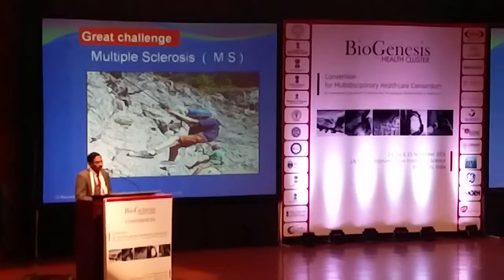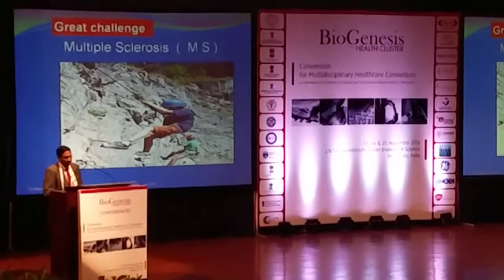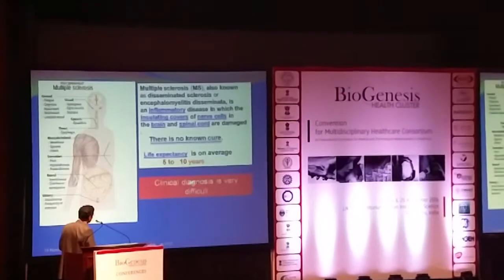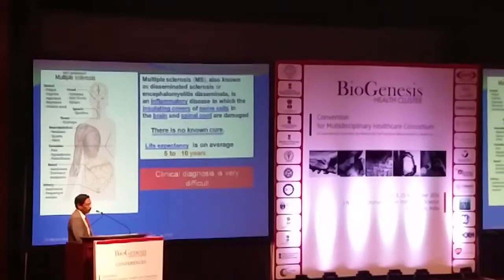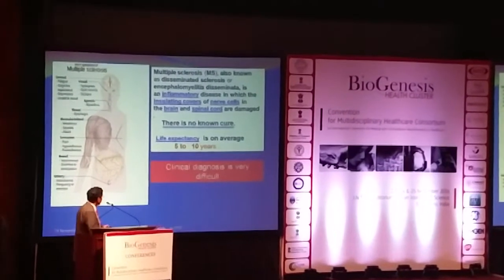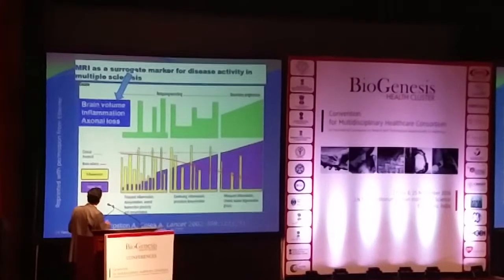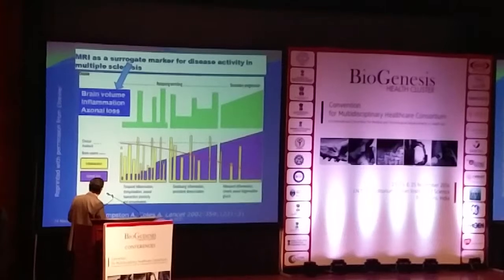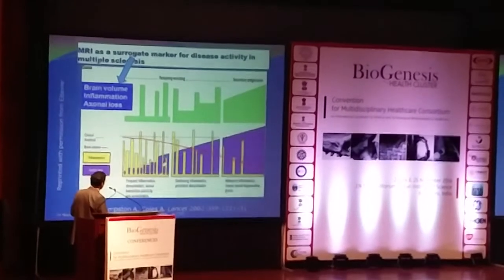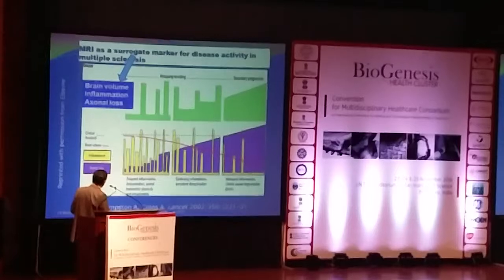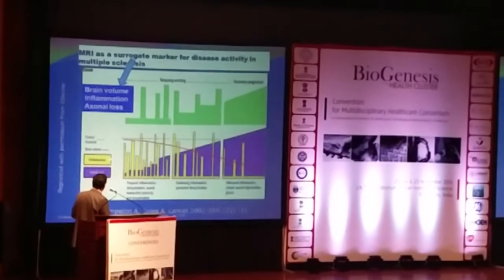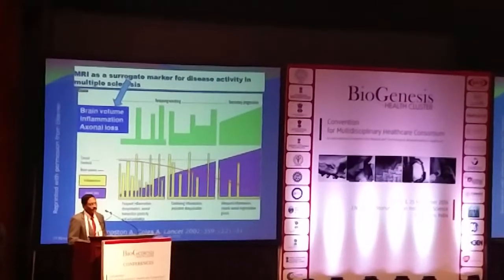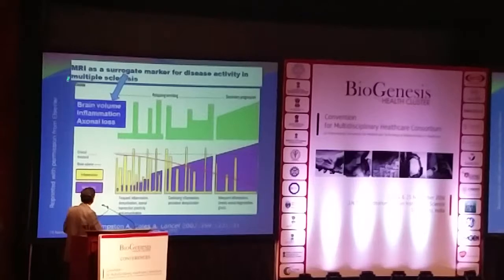One major problem is multiple sclerosis — very difficult to diagnose clinically. What happens to these patients? Diagnosis is very difficult, and life expectancy after diagnosis is about five to ten years; it is more common in females. Using functional MRI as a surrogate marker, you can see a decrease in blood volume, inflammation, and infection. The yellow areas show inflammatory changes, the brain volume gradually comes down, and there is axonal loss. These are the three fundamental things that happen in the brain, and all three can be found with MRI.